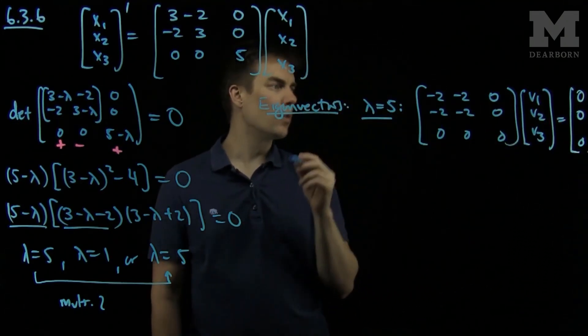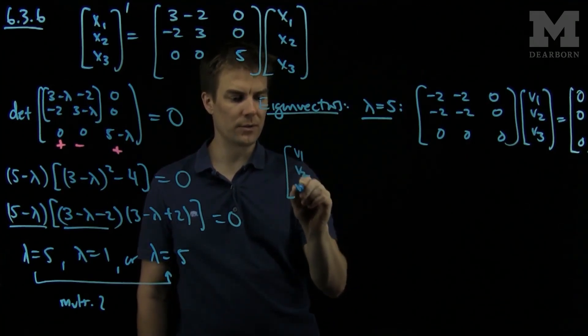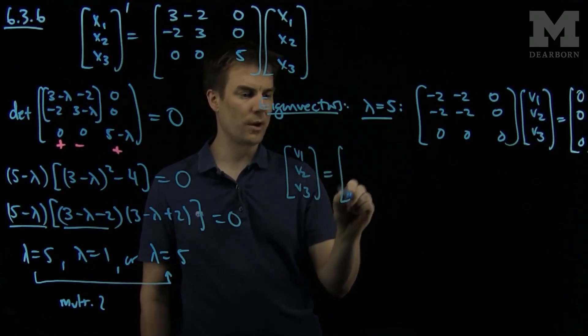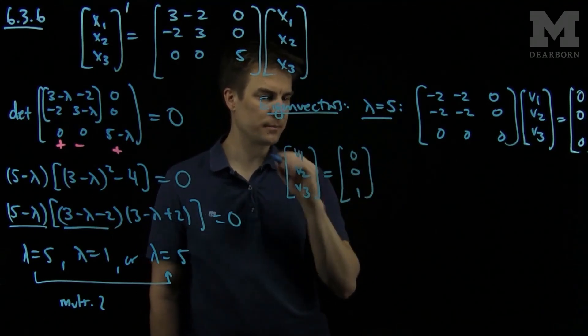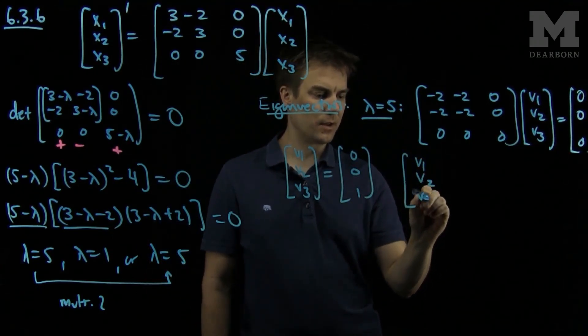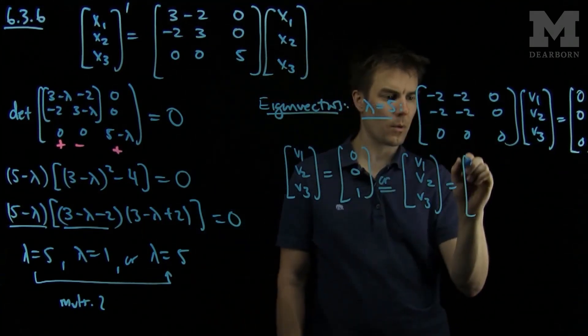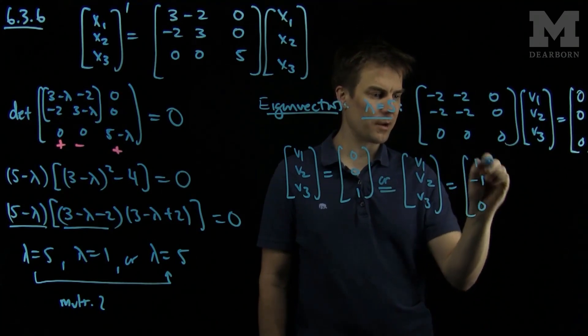We can see that there are two independent eigenvectors that work here. [v1, v2, v3] for choice number 1 could be [0, 0, 1]. And another choice for eigenvector [v1, v2, v3] could be [1, -1, 0].